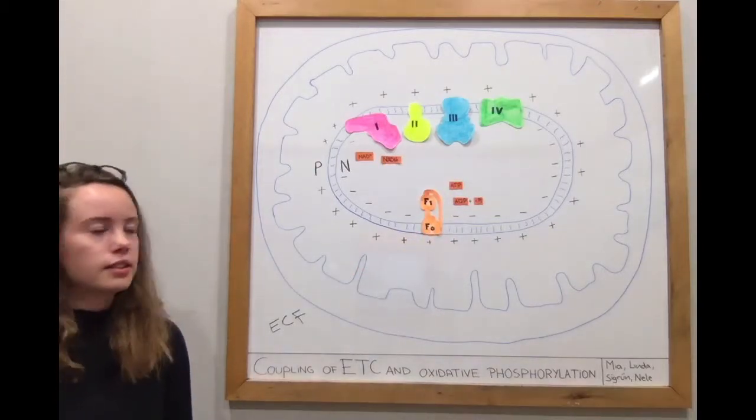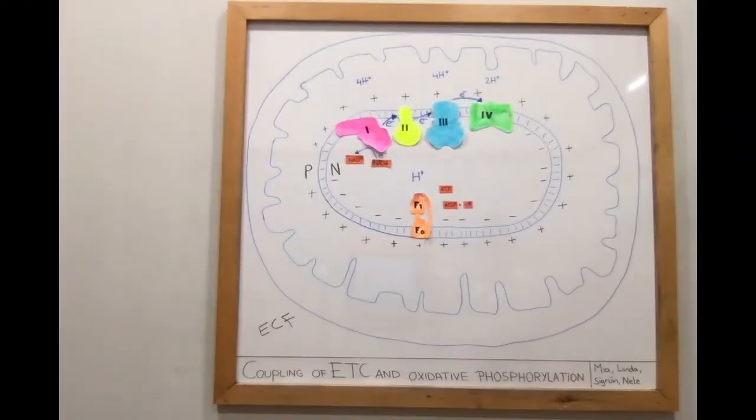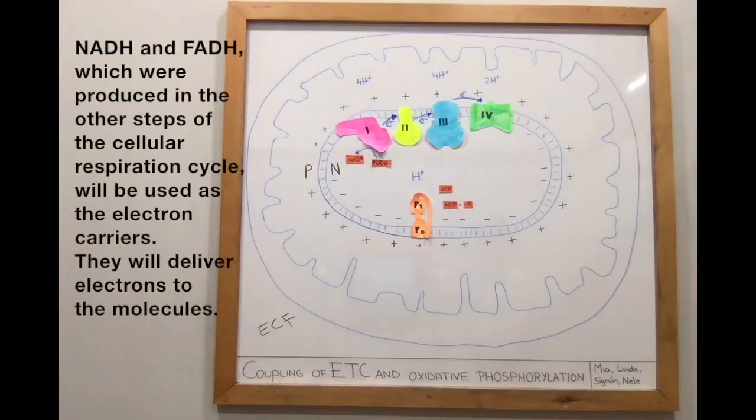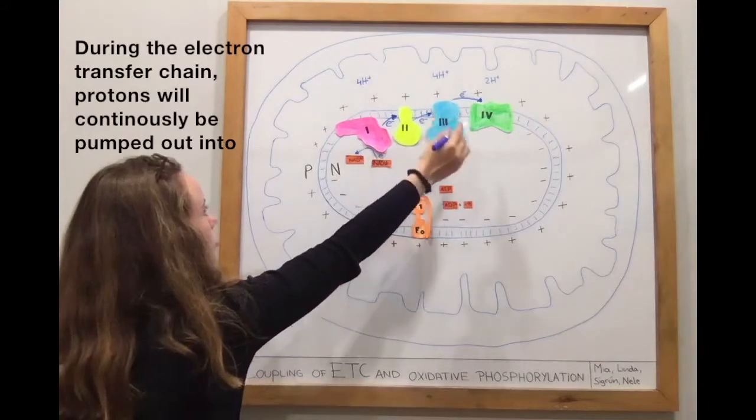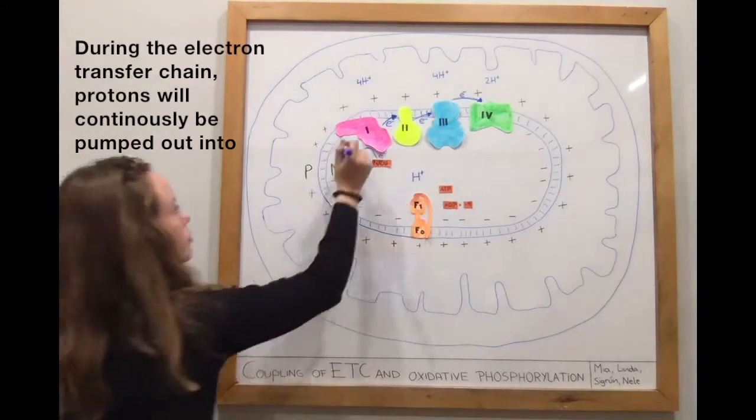We will now start our video by talking about the last part of the Krebs cycle. NADH and FADH2, which were produced in the other steps of the cellular respiration cycle, will be used as the electron carriers. They will deliver electrons to the molecules during the electron transfer chain. Protons will continuously be pumped out into the intermembrane space or used within the complexes for reactions.